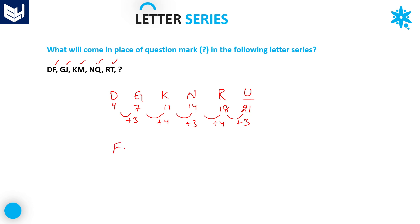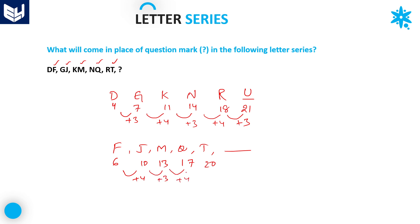Now observe all the second letters: F, J, M, Q, T. Write down the position numbers: 6, 10, 13, 17, 20. The gaps are: plus 4, plus 3, plus 4, plus 3 — alternating plus 4 and plus 3. So the next gap must be plus 4. 20 plus 4 equals 24, and 24 corresponds to the letter X. Therefore, in place of the question mark, the first letter is U and the second letter is X — the answer is UX.